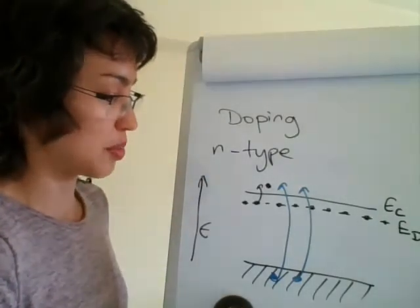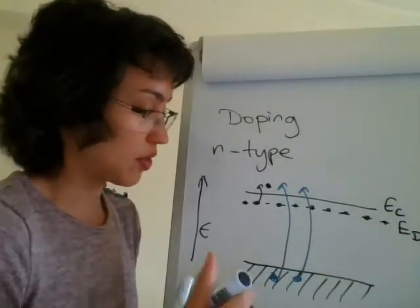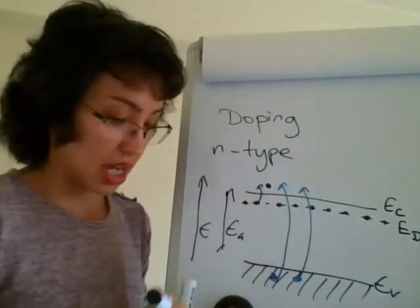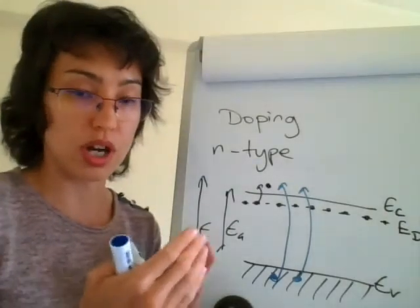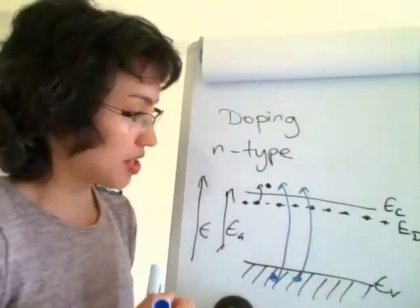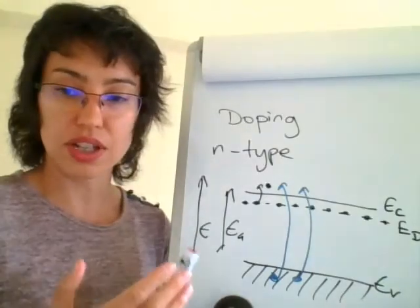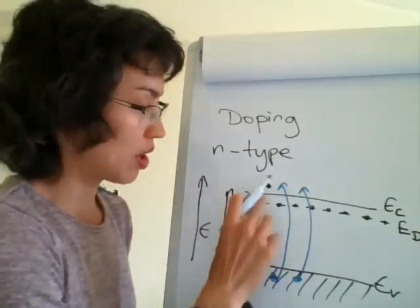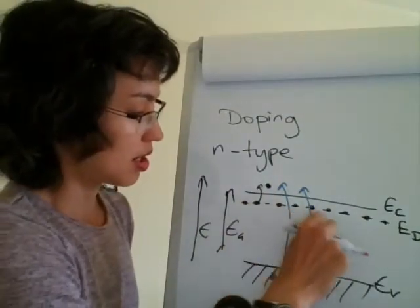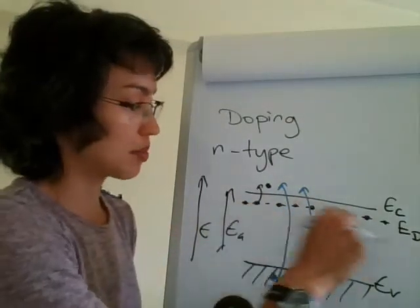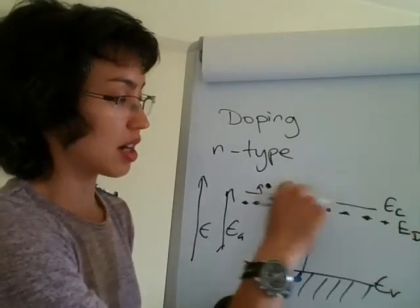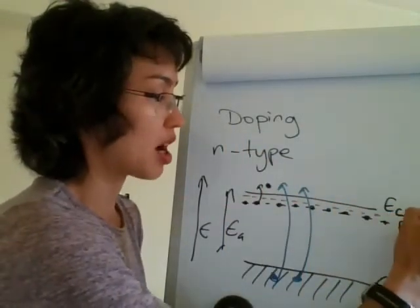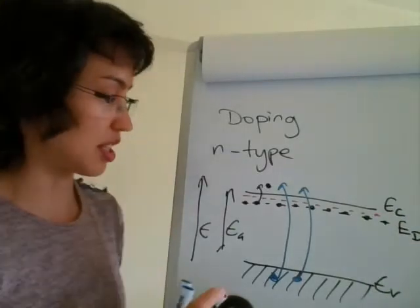So on the n-type band diagram, the key labels are EC, ED, and EV, with EG representing the full band gap. For the Fermi level: at absolute zero, the donor electrons are at energy level ED and the conduction band is empty. The Fermi level at absolute zero is therefore halfway between EC and ED — that's the first thing you need to know.